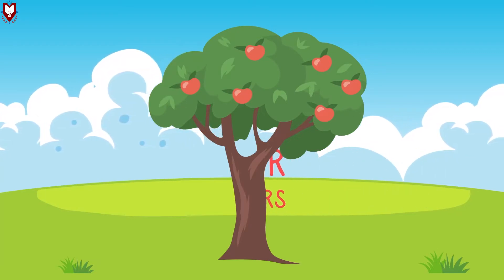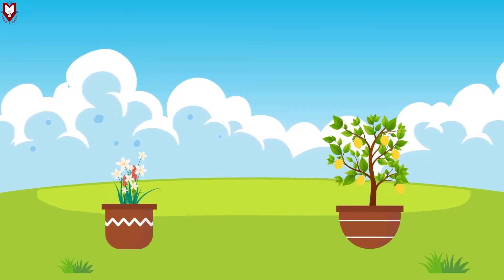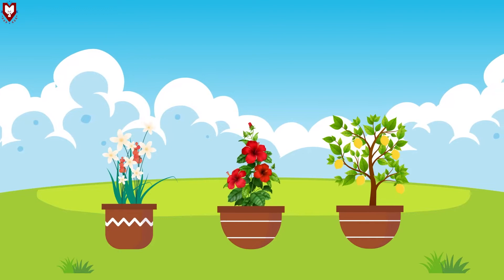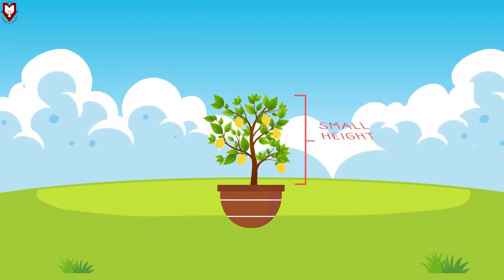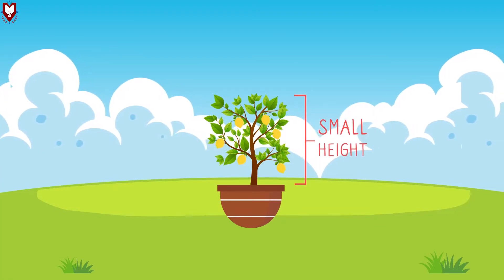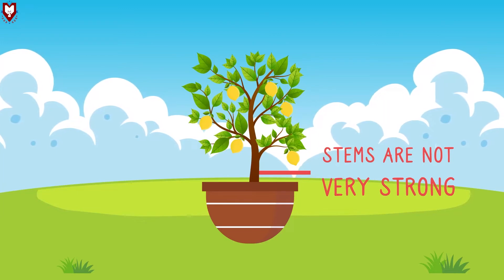Likewise plants like lemon, jasmine, hibiscus are small plants. They grow to a small height and their stems are not very strong. These are called shrubs.